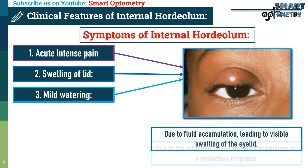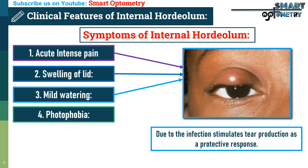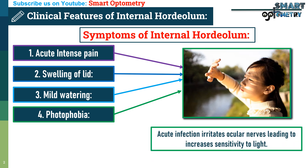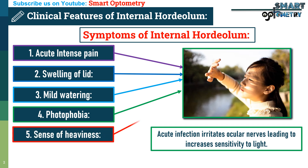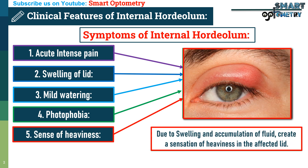3. Mild watering, due to the infection stimulating tear production as a protective response. 4. Photophobia — acute infection irritates ocular nerves, leading to increased sensitivity to light.